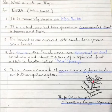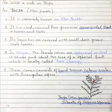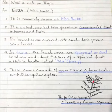By leaving a line, write the third point: its branches are covered with small dark green scale leaves. The fourth point: in thawja, the female cones are spherical or oval in shape and about the size of a spherical fruit which is locally called 'berry' (b-e-r-r-y).